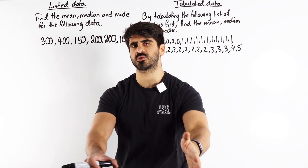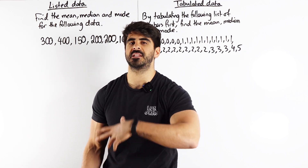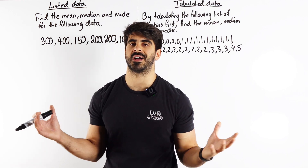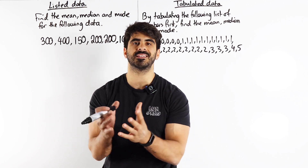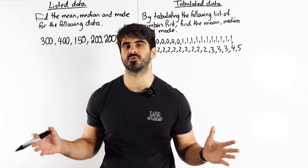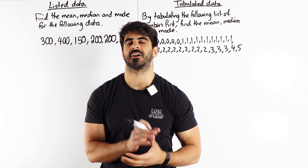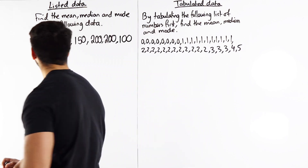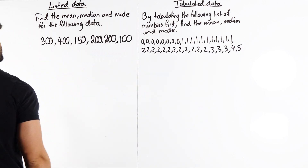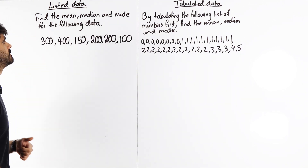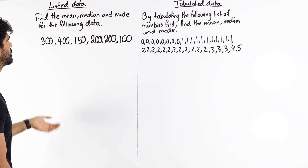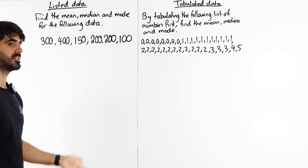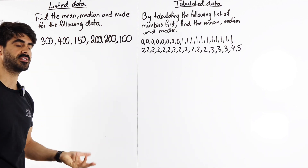The first one is the mean. The mean is good because it takes into account all values. The mean is simply: add up all the values you see and divide by however many numbers you see. So here I've got: find the mean, median, and mode for the following data. All of this data is known as discrete data.